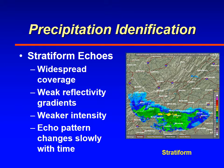Stratiform echoes don't change as fast — they're more stable, they cover a larger area, and typically have weaker radar returns. The gradient is also weaker, so instead of reds you'll see greens and maybe a little bit of yellow, and that change occurs over a large distance without varying much.